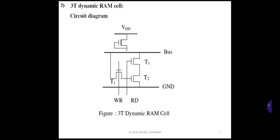Otherwise, if 0 is stored, T2 will be non-conducting. As T2 is non-conducting, the bus line remains high due to the pull-up arrangement — because of the pull-up transistor above, the bus line remains high. This completes the read operation.